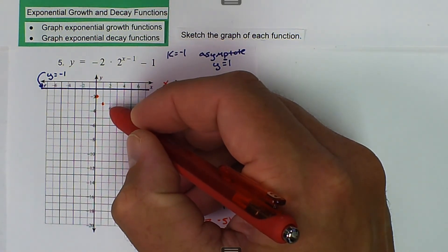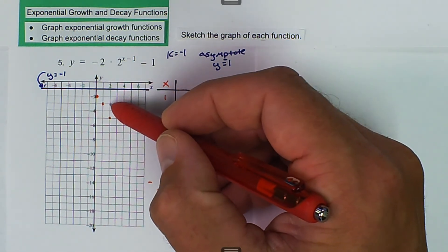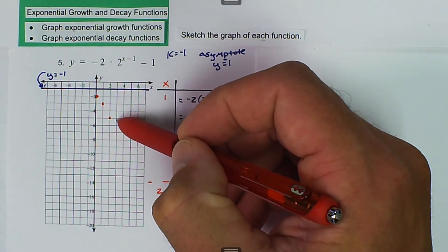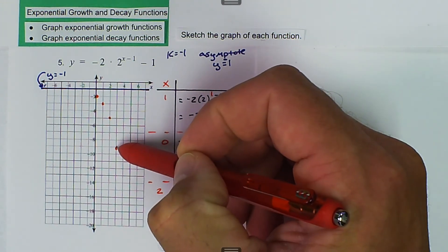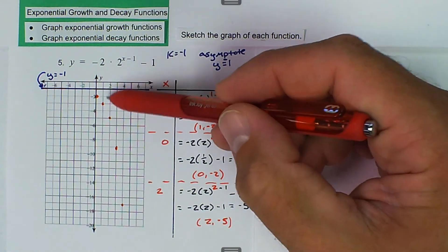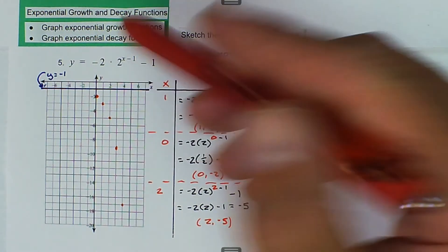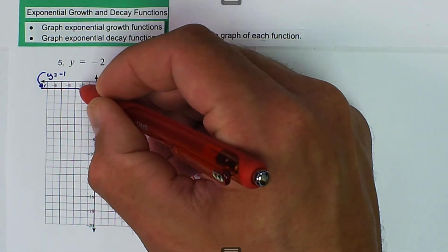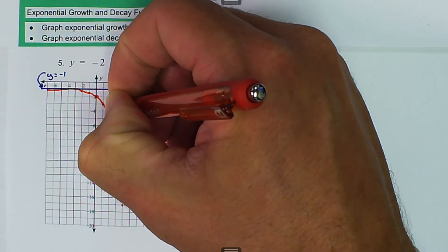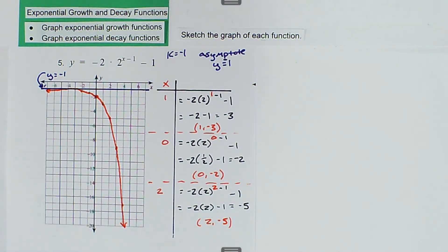So we go to (2, -5) right there. From the first point, we go over 1, down 1, then over 1, down 2, then over 1, down 4, then over 1, down 8, and then we're going to be off the graph. So we keep increasing — over 1, down 1, over 1, down 2, over 1, down 4 — we keep doubling how far we go. Going the other way, we go to half as we get closer to the asymptote. Then we just sketch our graph that goes through those points, and that's what our graph will look like.